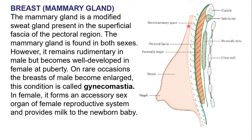The mammary gland is present superficially under the skin. Under this gland, there is fat, and the green line shows the fascia known as the clavipectoral fascia. This is the clavicle bone, and this fascia extends from the clavicle to the pectoral region, hence called the clavipectoral fascia.